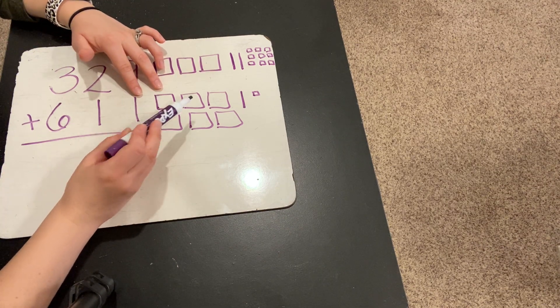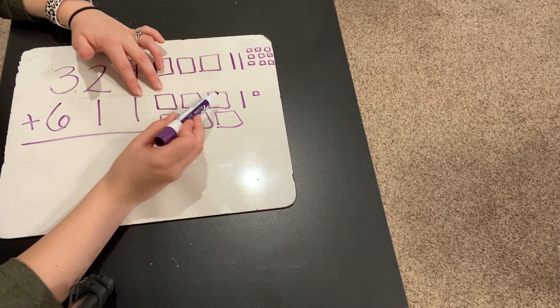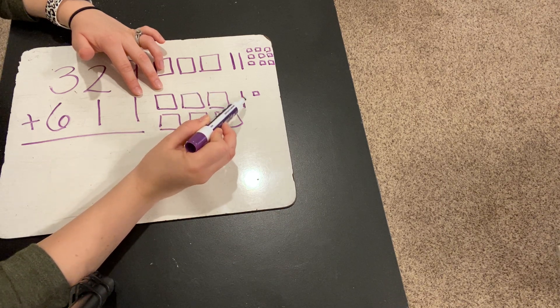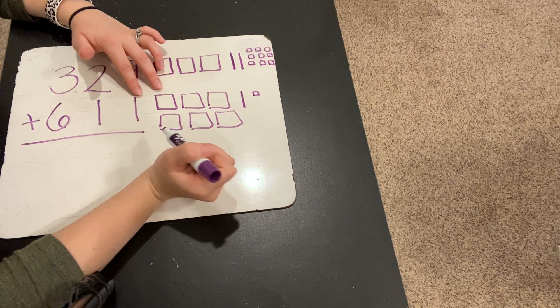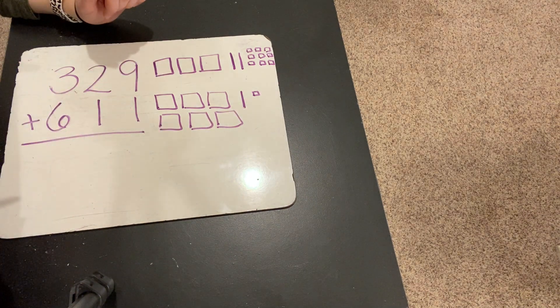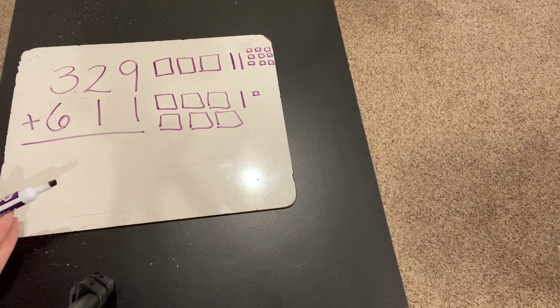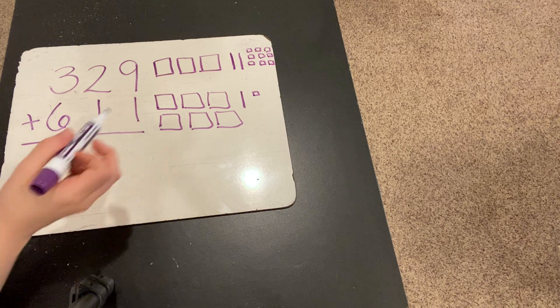Let's check 611. 100, 200, 300, 400, 500, 600, 610, 611. All right, now we're ready to add them together. We're going to count our hundreds first, then our tens, and then our ones. So, let's do it together.